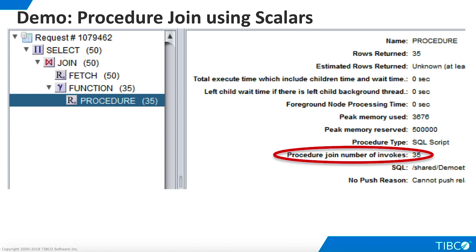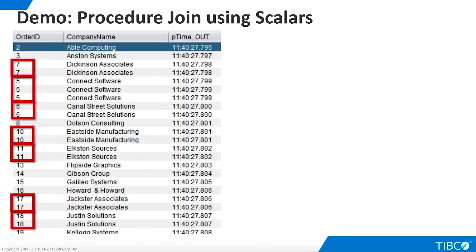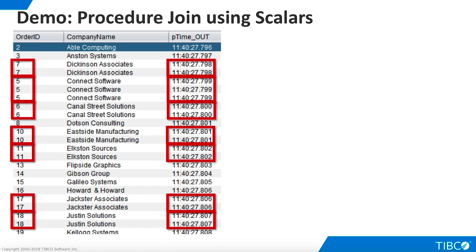If we execute and show statistics in TDV Studio, we see that the procedure was executed 35 times. However, the view returns 50 rows, so our procedure was not executed for every row in the view. Remember that procedure join only executes the procedure once per unique set of input parameter values. Our result shows that when order ID is non-unique, the time values returned by the procedure are identical, indicating that the results from the first execution were used in the joins to subsequent rows for the same order ID.